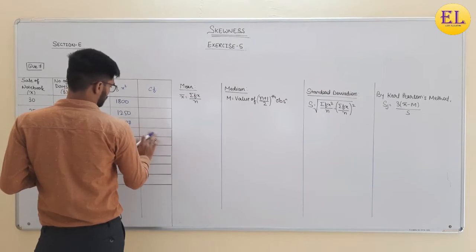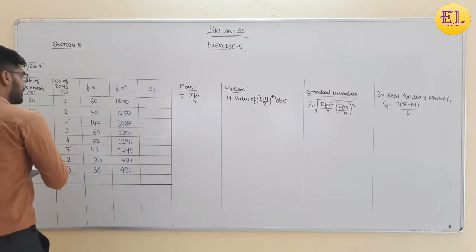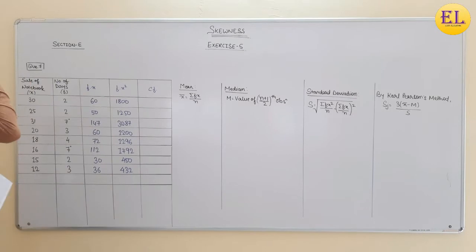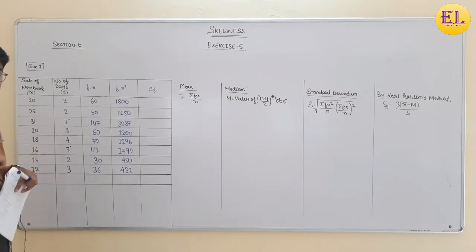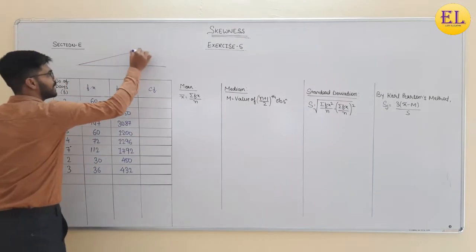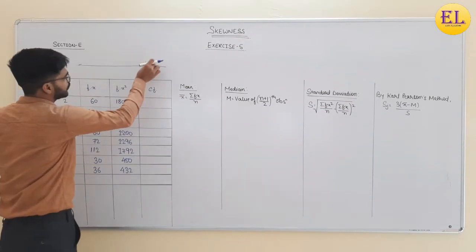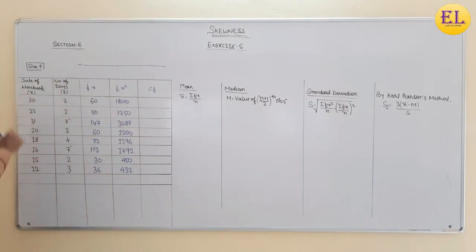First look at how it has been given. We know that for finding median, we need to arrange the values in the ascending or descending order. Because median is a positional average. In ascending or descending order, you have to arrange the data. This is discrete data. Look here, the highest value here is 30, then 25, 31, 20, 18, 16, 15, and 12. Here, the data is given in this way.